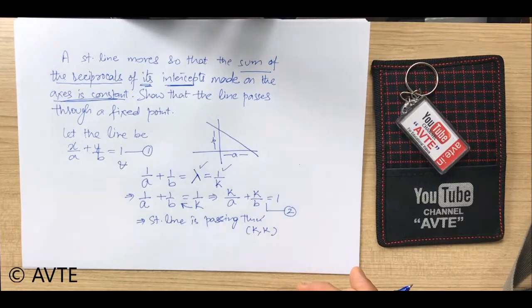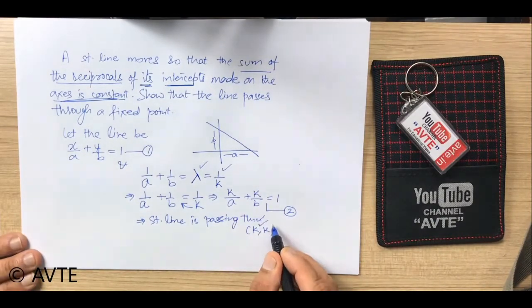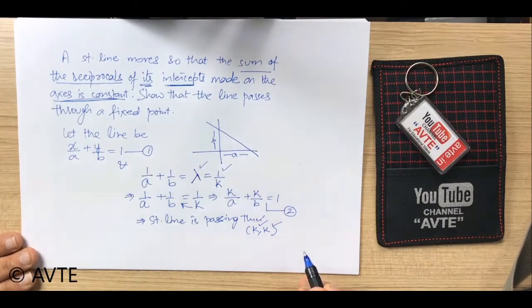So irrespective of the lengths of the intercepts, if the sum of the reciprocals of the intercepts is constant, then all those lines will pass through k, k which is the fixed point. Thank you very much.